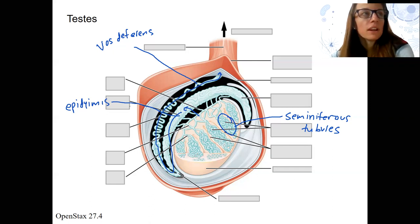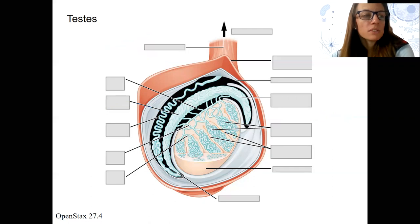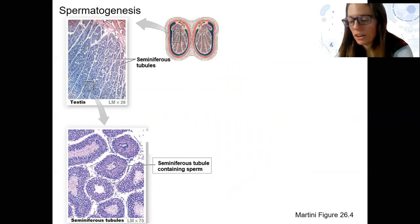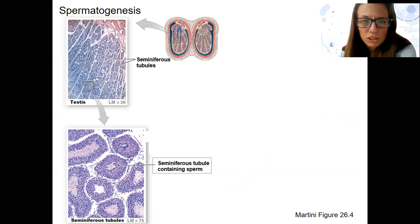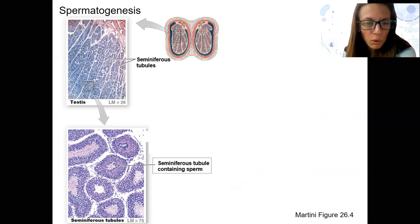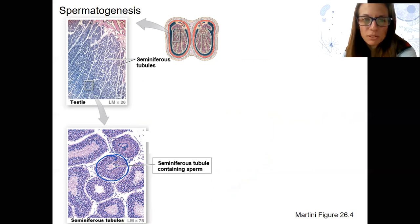Let's look at what happens in sperm development. Here is a cross-section of a testis — so if you zoom in, this looks a lot like what we just saw. This is a histology section you're going to see in lab. Here are all the seminiferous tubules — you can see there are a whole lot of them, many little tubules. And if you zoom into one of them, here is one tube — a cross-section of one of the many tiny little tubes. This contains sperm.